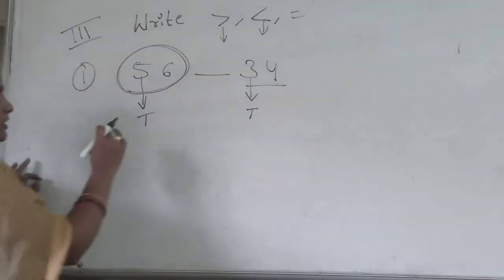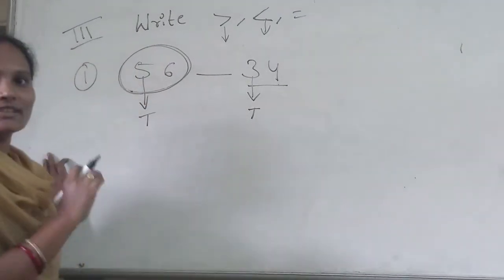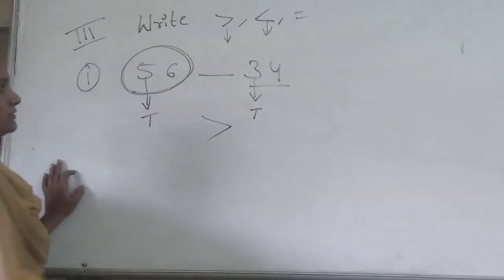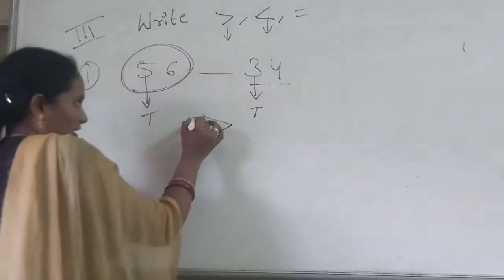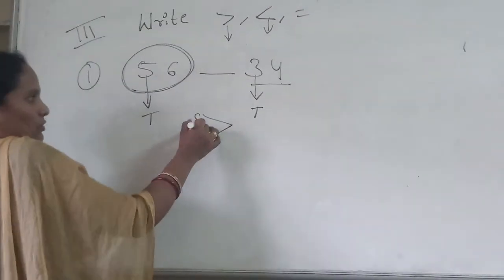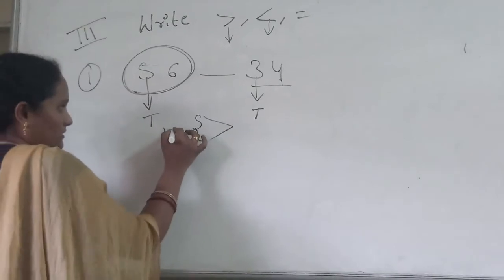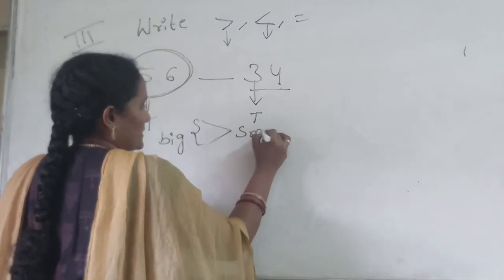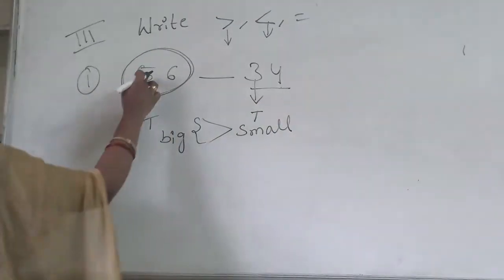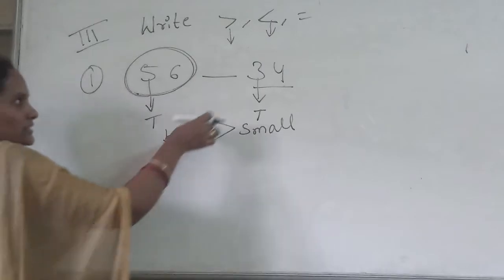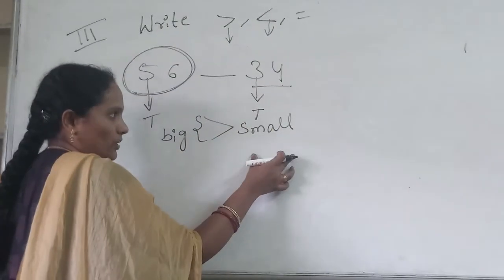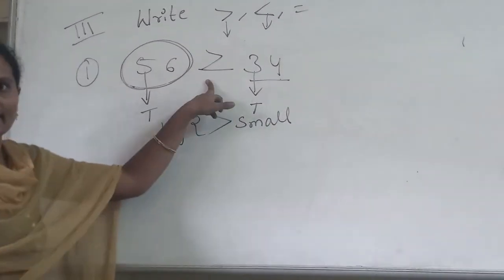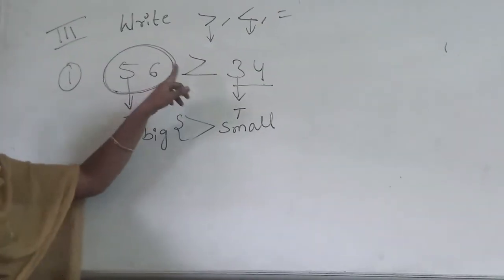Now, which symbol do we use here — less than or greater than? Because the opening sign goes with the big number and the closing sign goes with the small number, and 56 is the big number while 34 is the small number, we put the greater than symbol here. The answer is: greater than.